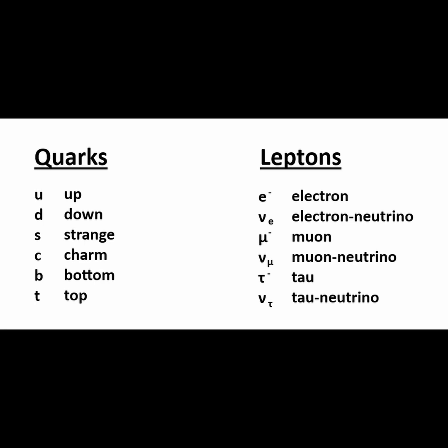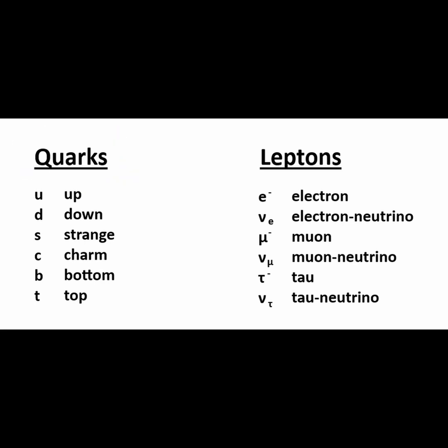Those structures consist of quarks. The proton is made of two up quarks and one down quark. The neutron is made of one up quark and two down quarks. It is the quarks that are fundamental.